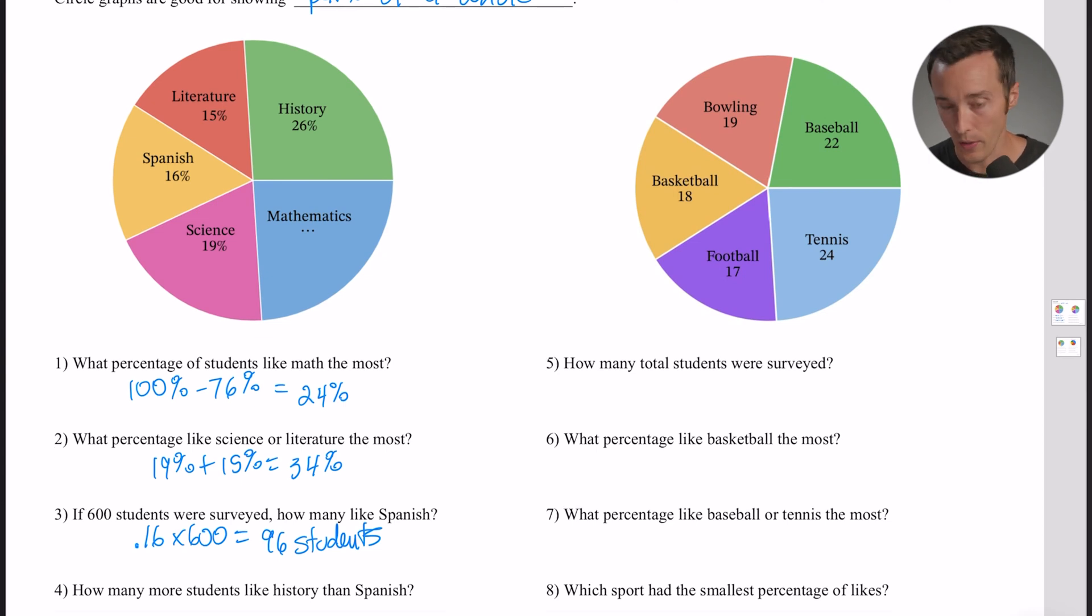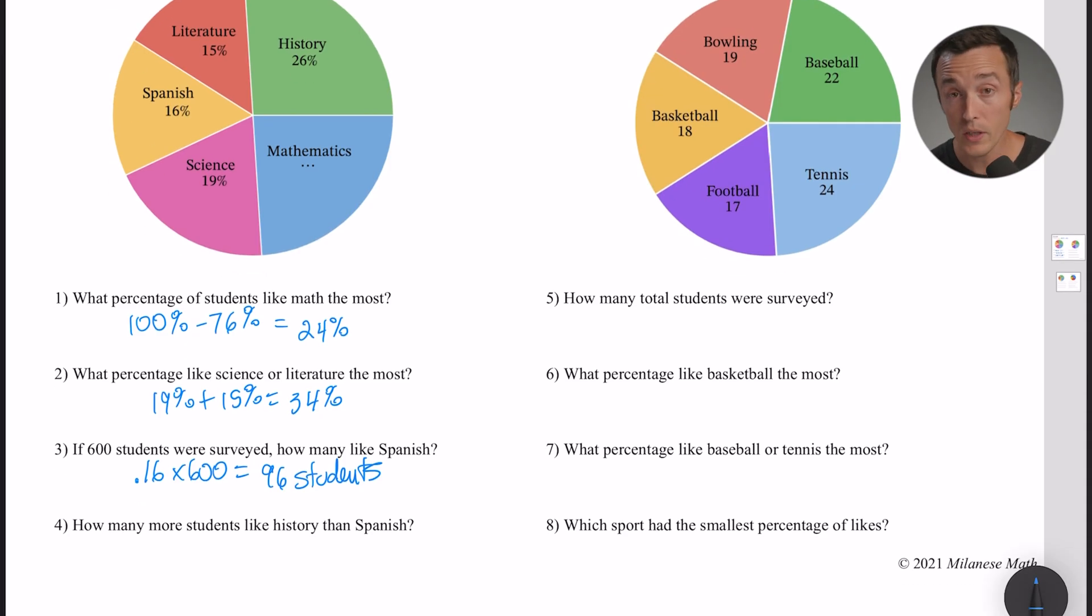So 96 students liked Spanish the most. In other words, 16% of 600 is 96 students. Take that to kind of go with number four where it says how many more students like history than Spanish? Well I know that there's 96 students that like Spanish - that was for number three - but I don't know how many like history. We can do the same thing though. Take the history percentage as a decimal, so 26% becomes 0.26, and multiply it by the whole number of students, which in this example is 600. If you multiply that out, you're going to get 156 students. Now we're not quite done - that's 156 students that like history, but the question says how many MORE students like history than Spanish. So really they're saying how does that 156 compare to the 96? So if we find the difference and subtract 96, we're going to get 60 students. In other words, the difference between the two is 60 students.